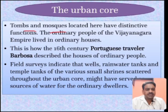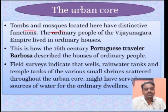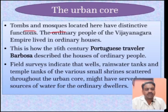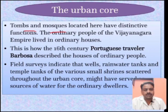Field surveys indicate that wells, rainwater tanks, and temple tanks of various small shrines were scattered throughout the urban core. There used to be small tanks where rainwater was collected, and the daily water requirement of these areas was met through these small tanks. They may have served as the source of water for the ordinary dwellers of the city - as noted by Barbossa.